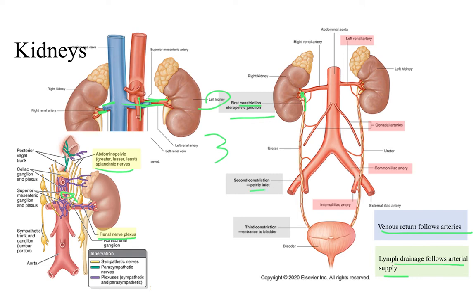The second constriction is at the pelvic inlet, right between the external iliac artery and the internal iliac artery. The third constriction is where the ureter is entering the bladder. As it goes into the bladder, it enters at an oblique angle into the wall of the bladder so that the bladder actually sits on part of the tube. As the bladder fills up, it actually shuts that off — acting as a valve, but also as a constriction point where renal calculi, or renal stones, can get lodged.